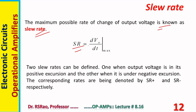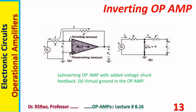The slew rate is dV₀/dt maximum. Two slew rates can be defined: one when the output voltage is in its positive excursion and another when it is under negative excursion, denoted SR+ and SR− respectively. After having some understanding of the characteristics of op-amps, we now move to the modes of op-amps.